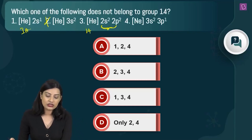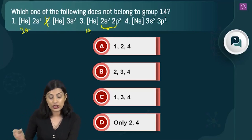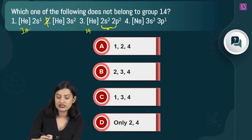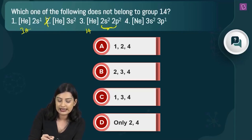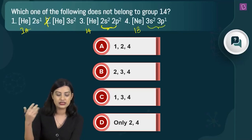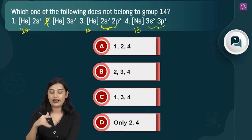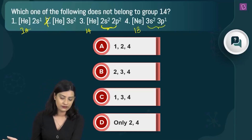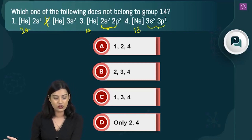Option 4 is neon 3s2 3p1. The outer shell configuration ns2 np1 corresponds to a group 13 element, not group 14. This is a tetrel — wait, group 13 is the triels, and group 14 is the tetrels.